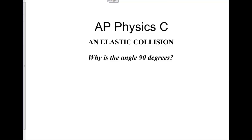This is Dr. Holt. This lecture is AP Physics C, on an elastic collision, and I titled this: Why is the Angle 90 Degrees? In this lecture, I want to go over where you have two masses. One has a velocity and they have a glancing collision. I want to prove that if the two masses are the same, the angle between the two final velocities will be 90 degrees.